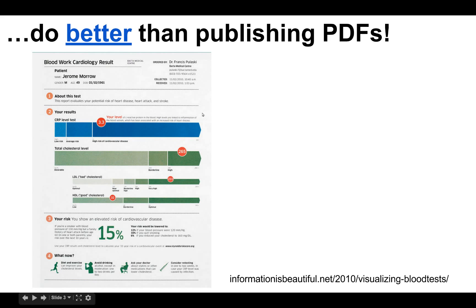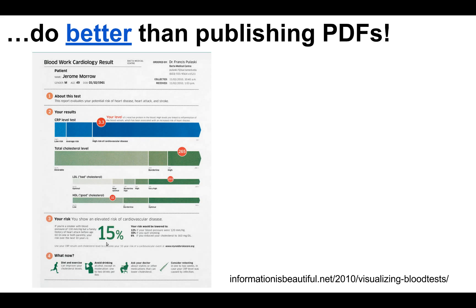The design that Dave McCandless and Stephanie Posevek put together incorporated a set of lab results — not just C-reactive protein, but total cholesterol, LDLs, and HDLs as well. They mixed those data with patient demographics, smoking status, and family history of heart disease, and used all of that information to calculate a Reynolds Risk Score — a 10-year risk that a patient is going to have a heart attack or stroke.